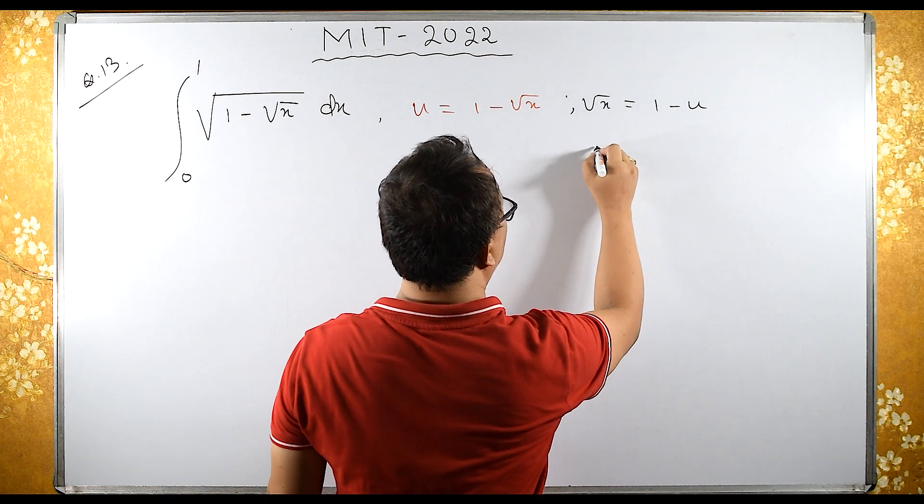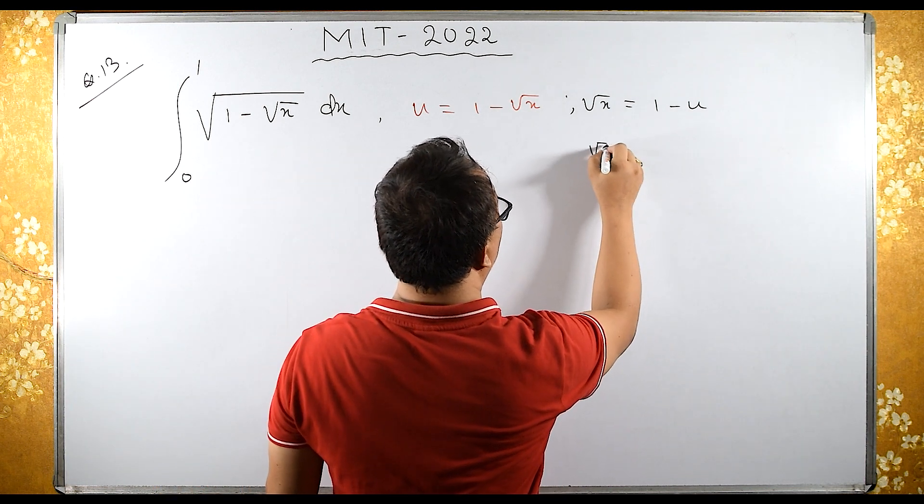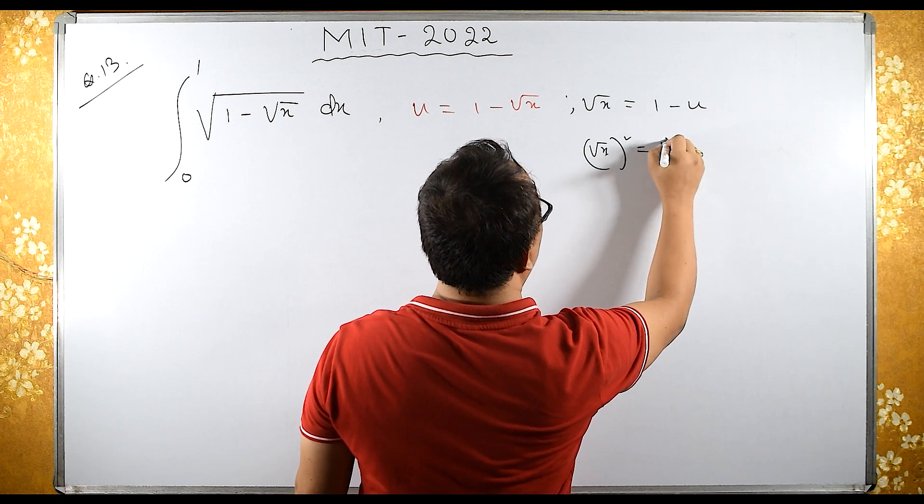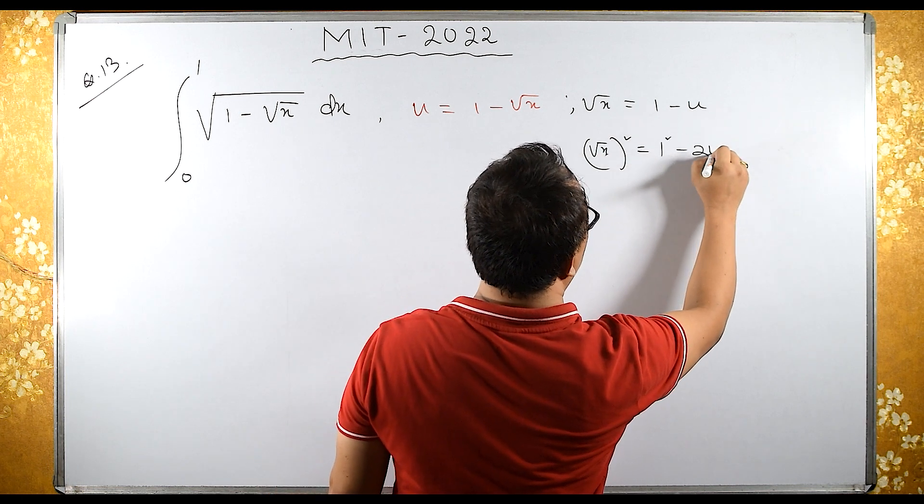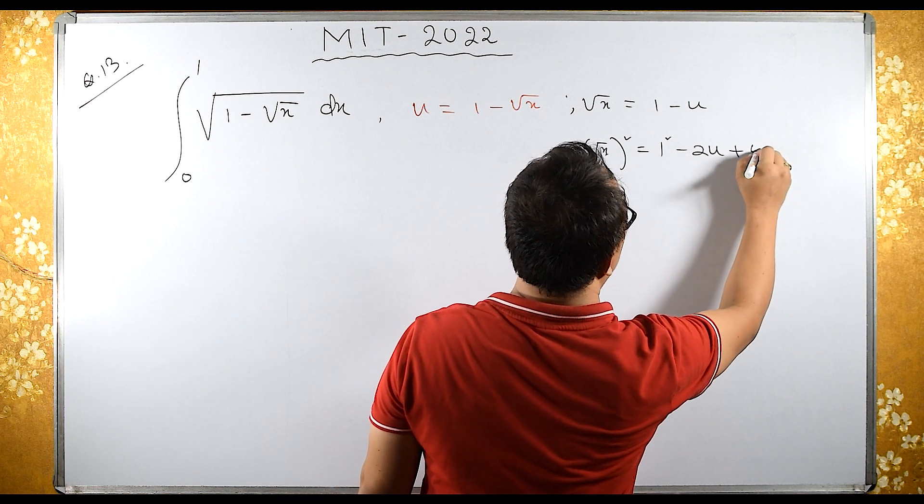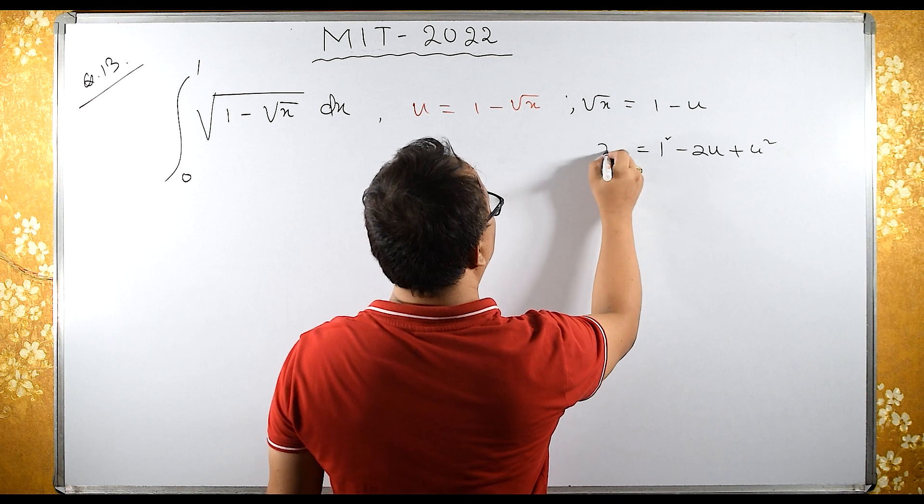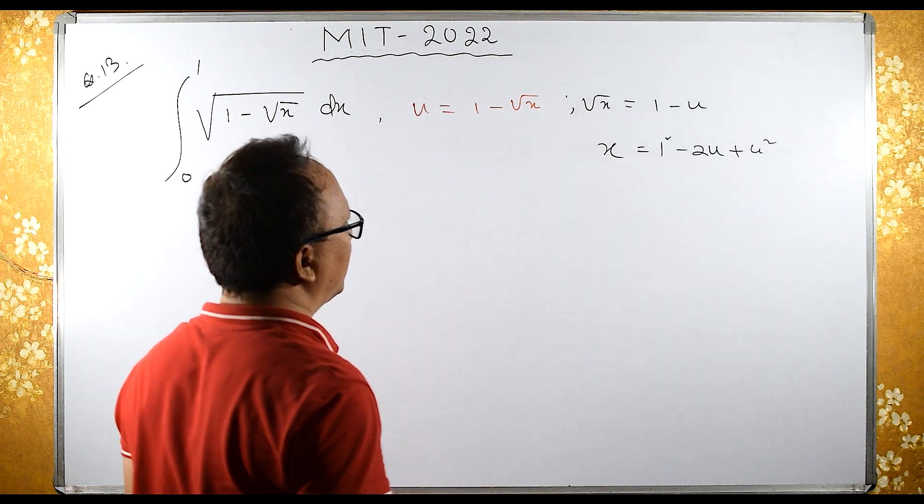Squaring on both sides: square root of x whole squared equals (1 minus u) whole squared. Using the formula a² - 2ab + b², we get x = 1 - 2u + u².